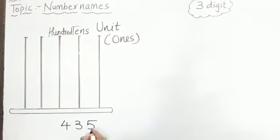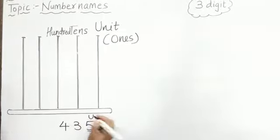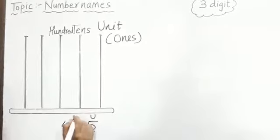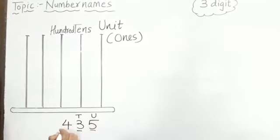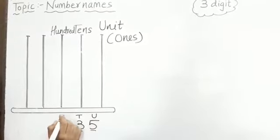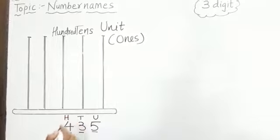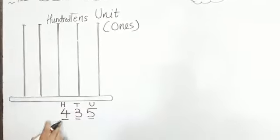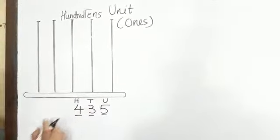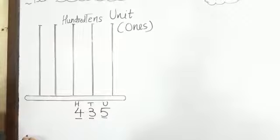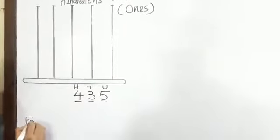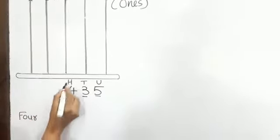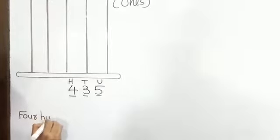5 is on the unit place, 3 is on the tens place, and 4 is on the hundreds place. We will start with the hundreds first. It is a 4, so we write 4 — then you have to write hundred.